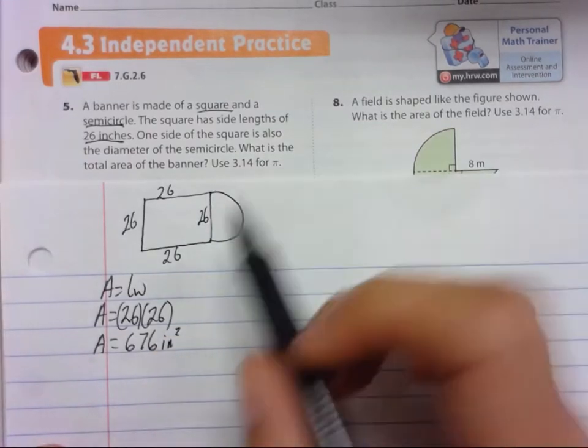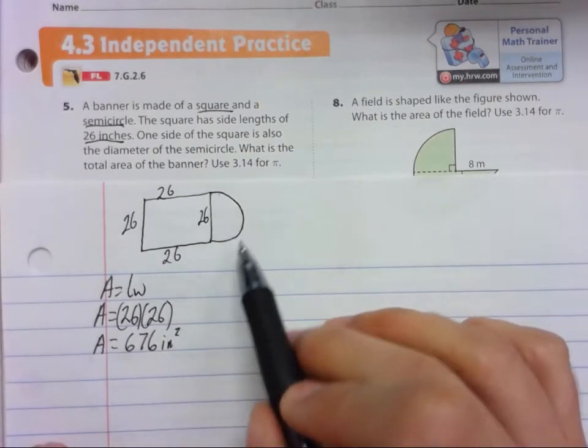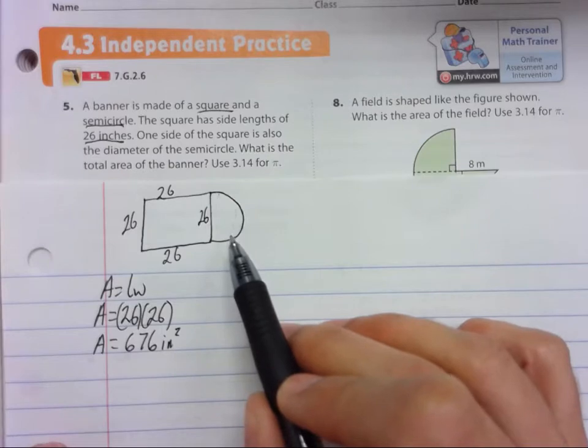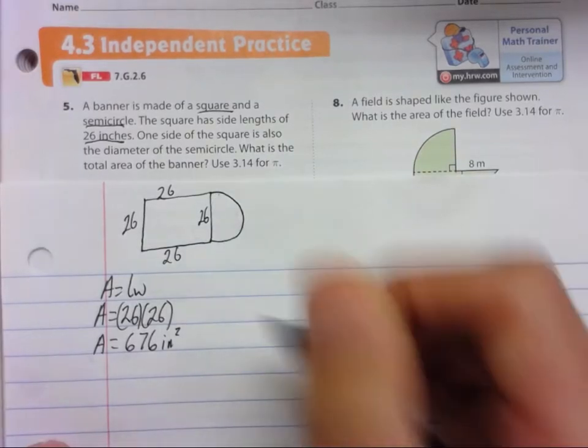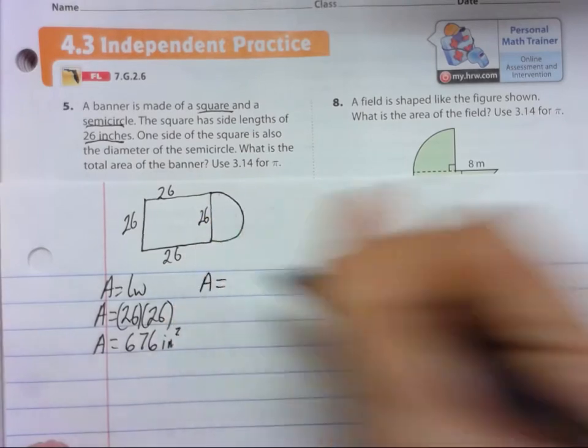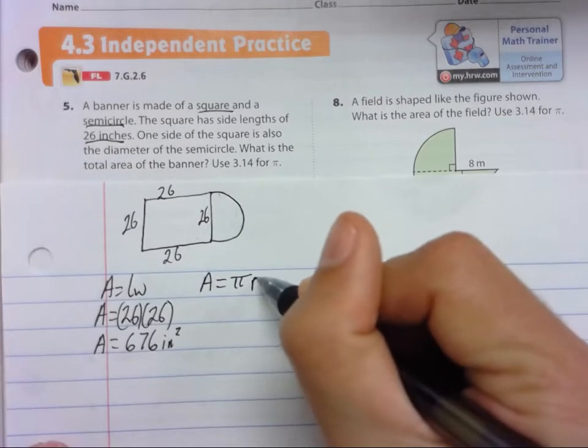Now we have this semicircle. We don't have a formula for the area of a semicircle, but all we have to do is find the area of a full circle and take half of it. So the area of a full circle, we start with the formula. Area equals pi times the radius squared.